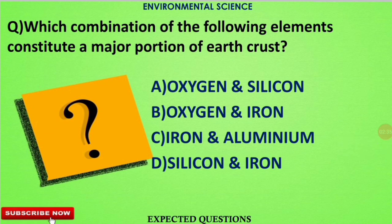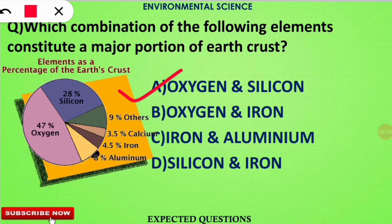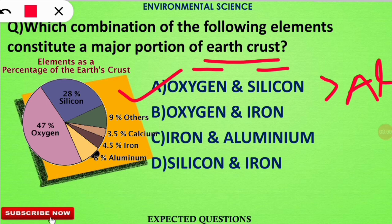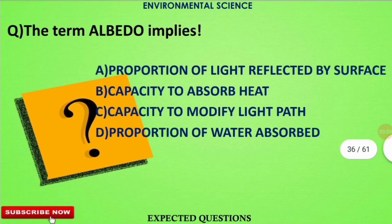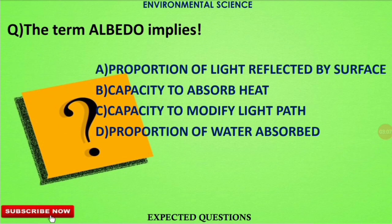The next question is: which combination of elements constitutes a major portion of the Earth's crust? The correct option is A — oxygen, followed by silicon, and then aluminium, are present in the maximum amounts in the Earth's crust.